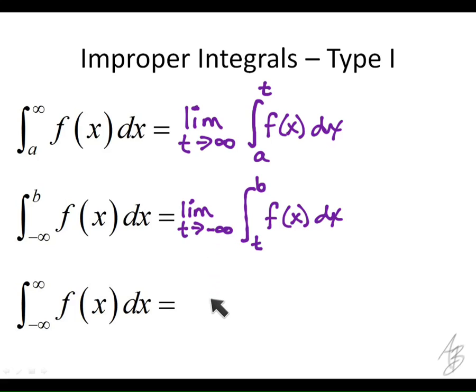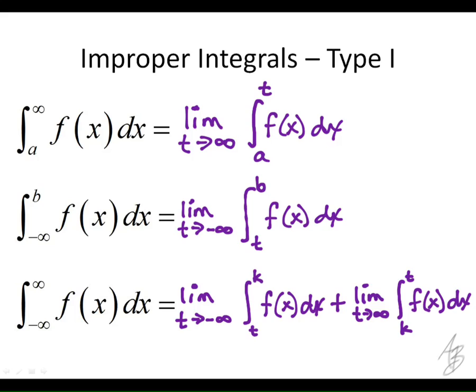Since we're approaching infinity and negative infinity with our limits, we're going to use L'Hôpital's rule from time to time when we encounter indeterminate forms. The third form is a little trickier — we have to split it up into two separate integrals with two separate limits. We split at some convenient constant k, taking the limit as t approaches negative infinity for the first part and as t approaches positive infinity for the second. Most of the time k equals zero is most convenient, but any constant works.